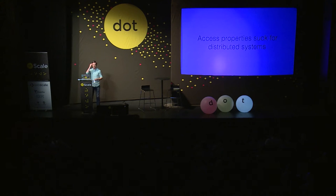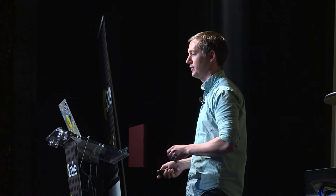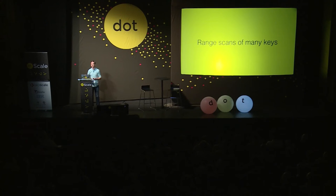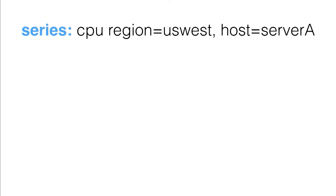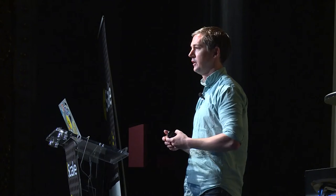Now, why is time series data so painful for distributed systems? The first issue is range scans of many keys. In InfluxDB, we organize time series data with a measurement — say CPU — and a set of tags describing the metadata, like key-value pairs where region is US-West and host is Server A. An individual key would be all that information plus a timestamp, representing an actual individual data point.